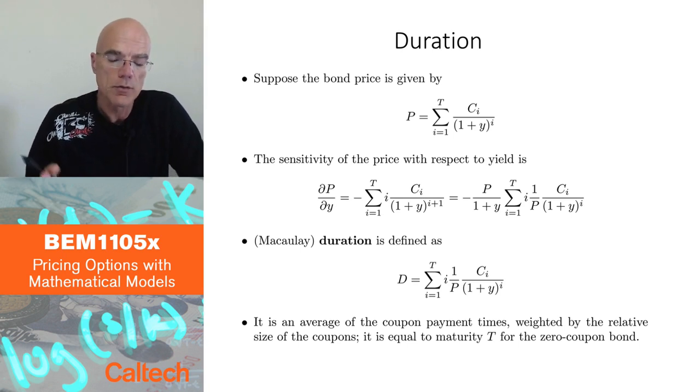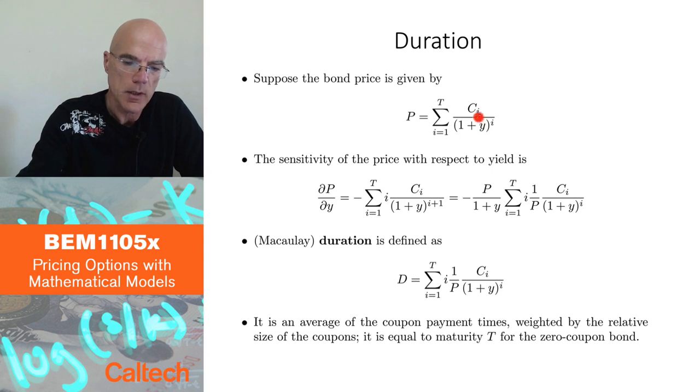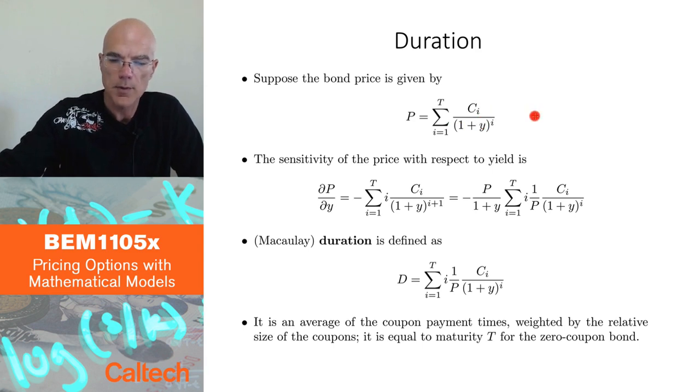Duration. I am going to do the simple case in which I am going to assume compounding once a year. My bond price is the present value of future payments, P = sum of Ci/(1+y)^i. Y is the yield. Ci are the coupon payments except at the very end that capital T is the coupon payment plus the face value of the bond. That's the expression for the bond price.